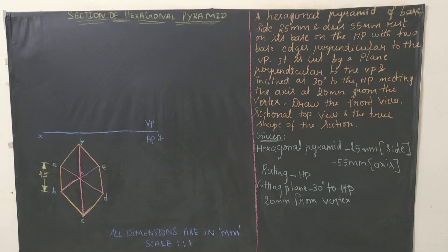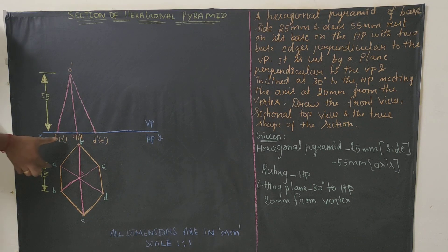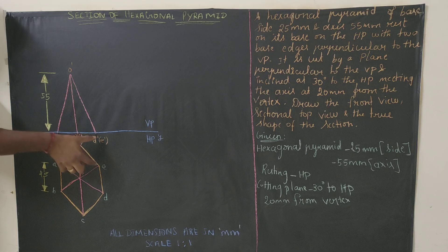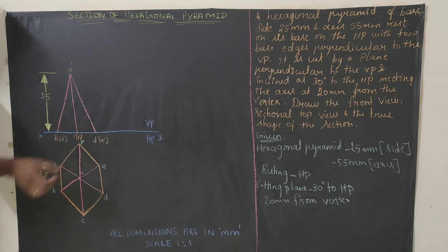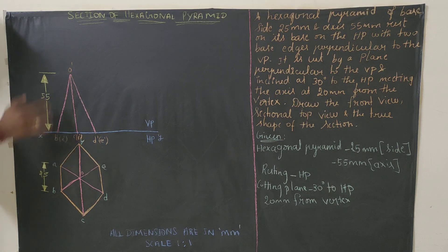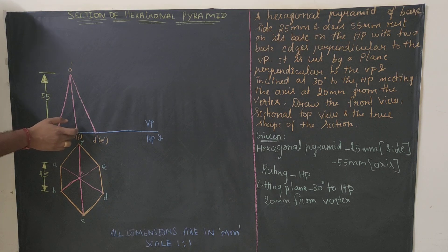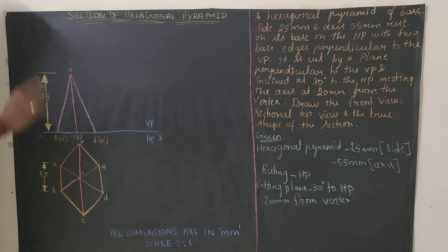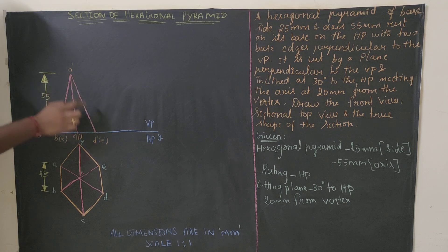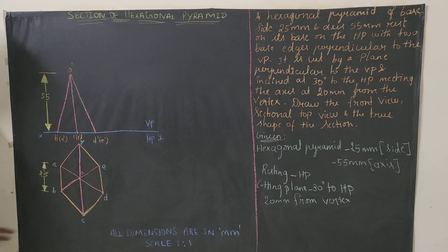Now extend all the top view points upward to get the front view. Keep your scale vertically with respect to A, F, and E to get their respective projected points. We will not put the axis in the front view because edges E and F will be visible edges — we consider only visible edges. From the center, for 55mm height mark the apex O-dash, and connect it to the projected base points to form the triangular front view.